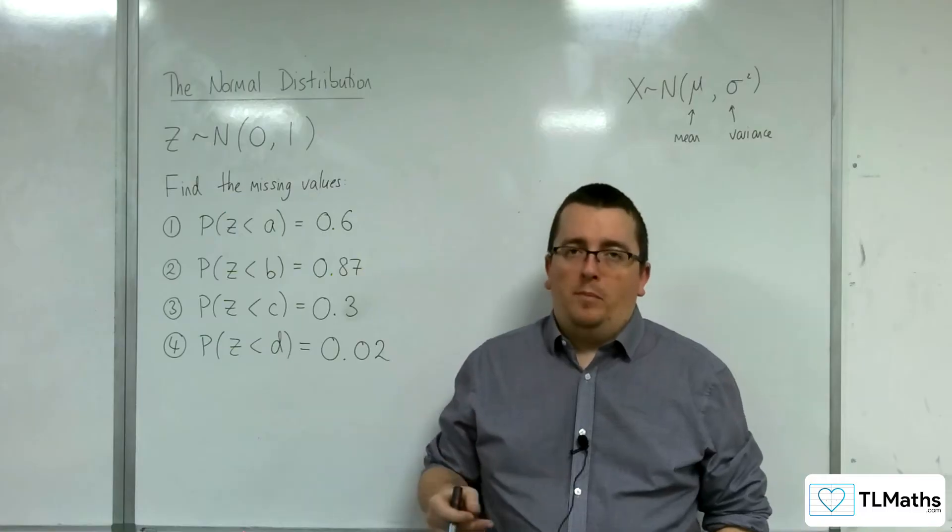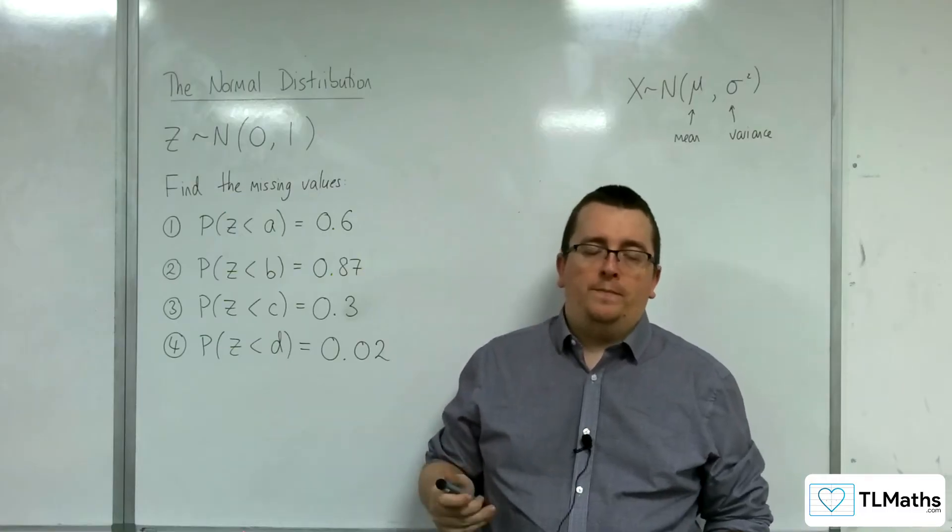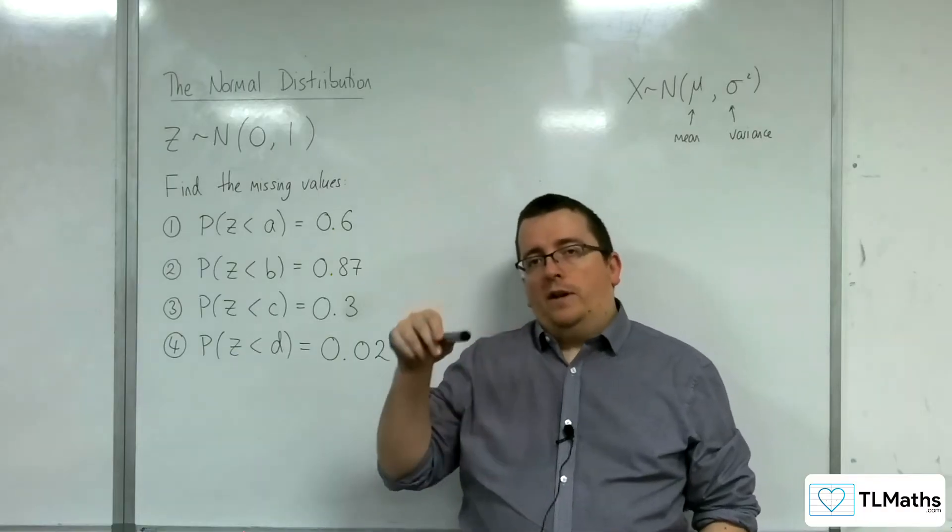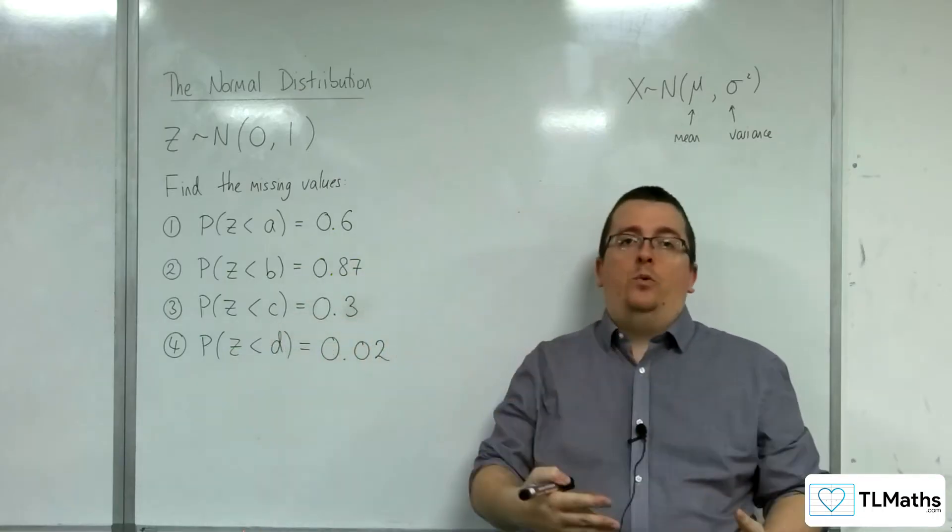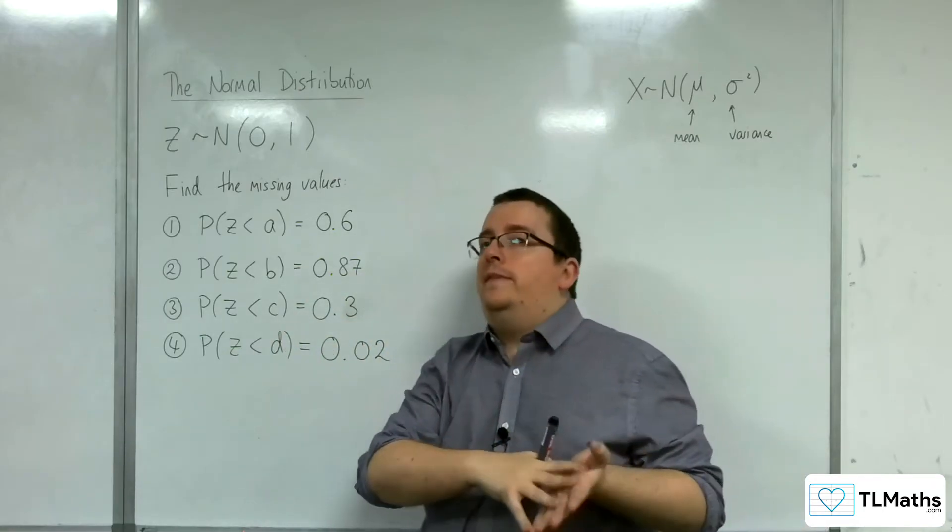So far, we've been finding probabilities using the normal distribution. Now, what we're going to be doing is, given the probability, can we work backwards and find the Z value in these cases?